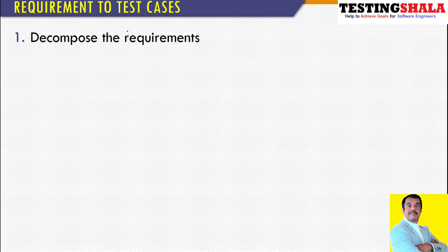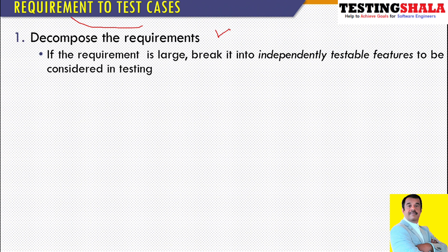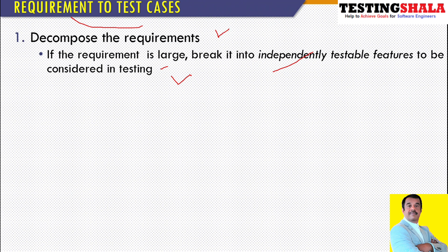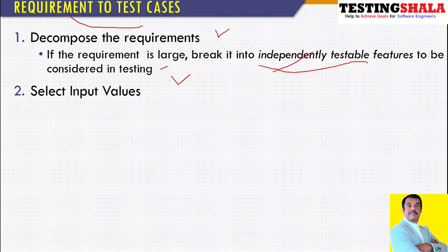A common question is: once we have a requirement, how do we derive test cases? We try to decompose the requirement — we need to split it. If it is very big and we cannot accommodate it to write test scenarios, we have to break that bigger requirement into smaller testable features, which can be tested independently without any issues.